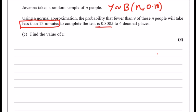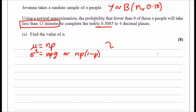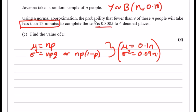To convert the binomial to a normal approximation, we need the mean and variance. For a binomial: mean = n × p = 0.1n, and variance = n × p × (1 − p) = n × 0.1 × 0.9 = 0.09n. So Y is approximately normally distributed with mean 0.1n and variance 0.09n.